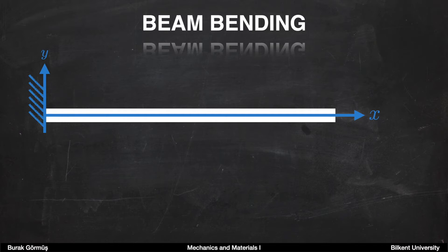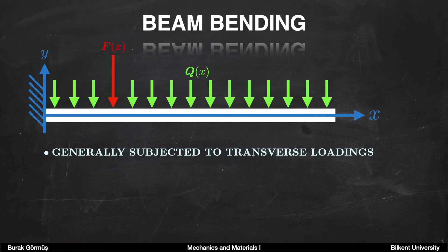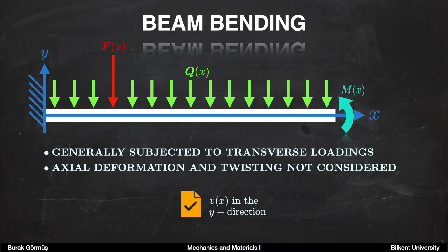Beams are long and rigid structures and they may have different boundary conditions throughout their lengths. For example, in this slide you are seeing a fixed beam. Beams are generally subjected to transverse loadings — this loading can be a point load or it can be distributed over their length. In addition to transverse loadings, they can be subjected to moments. While solving beam problems, it's assumed that they do not extend through their length, meaning actual deformation is not considered. Besides, twisting can be neglected, so deflection is only in the transverse direction.